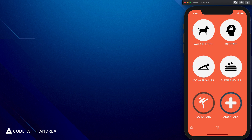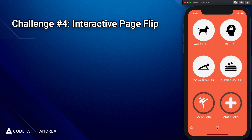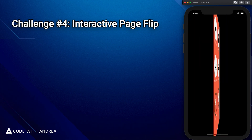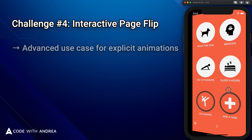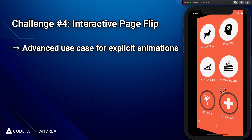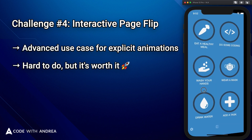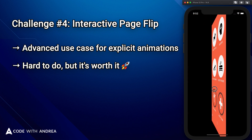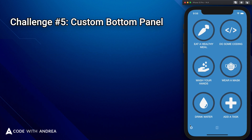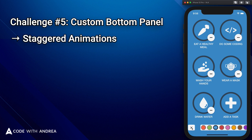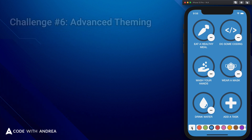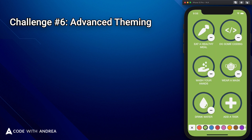Once we are done with this, we will get back to animations and implement an interactive page flip transition so that we can show six additional items. This is one of my favorite features because it makes the app so much more fun to use. And once we are done with this, we will implement a bottom panel that slides in and out when we click on the settings gear.